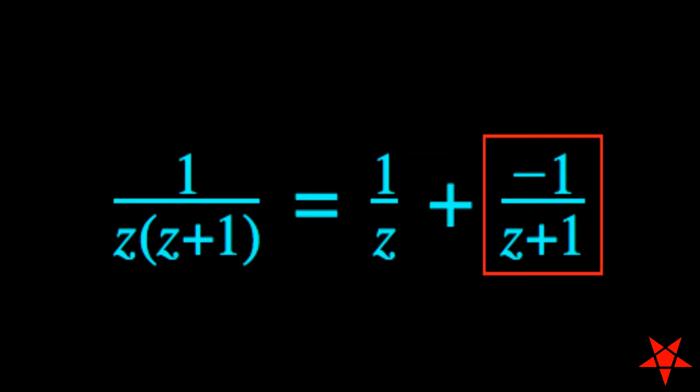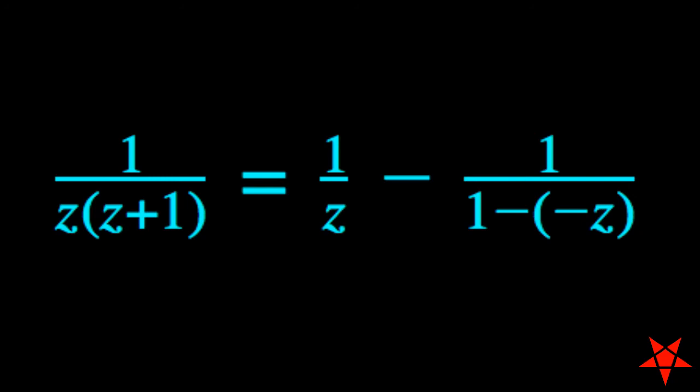But the second term does not presently match the appropriate form. If we change the positive z to a minus negative z, we now have a geometric series in z whose rules for convergence are compatible with the domain of the Laurent series that we wish to solve for.